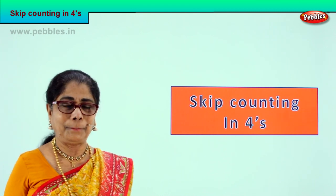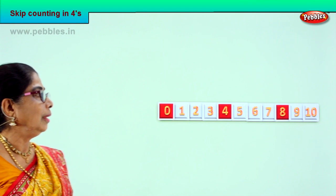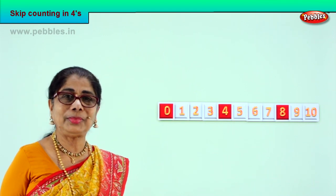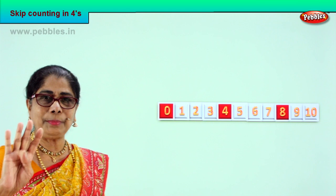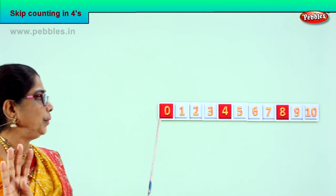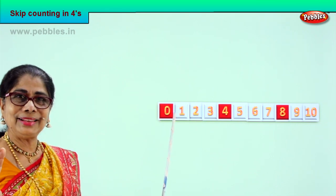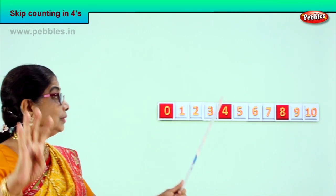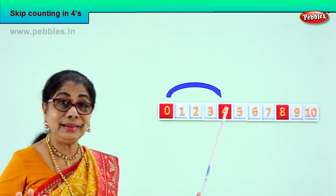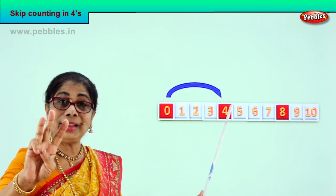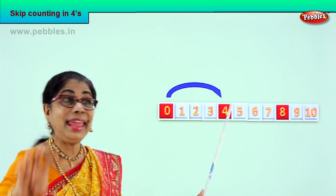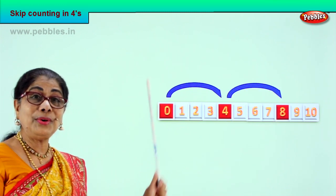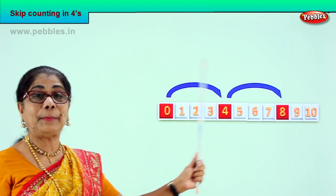Look what you have. Alright, 0 to 10. How do we count skip counting in four? We have zero here, 1, 2, 3, 4. You got the four colored? Up to four, 5, 6, 7, 8. Good, so 0, 4, 8. That's the pattern.